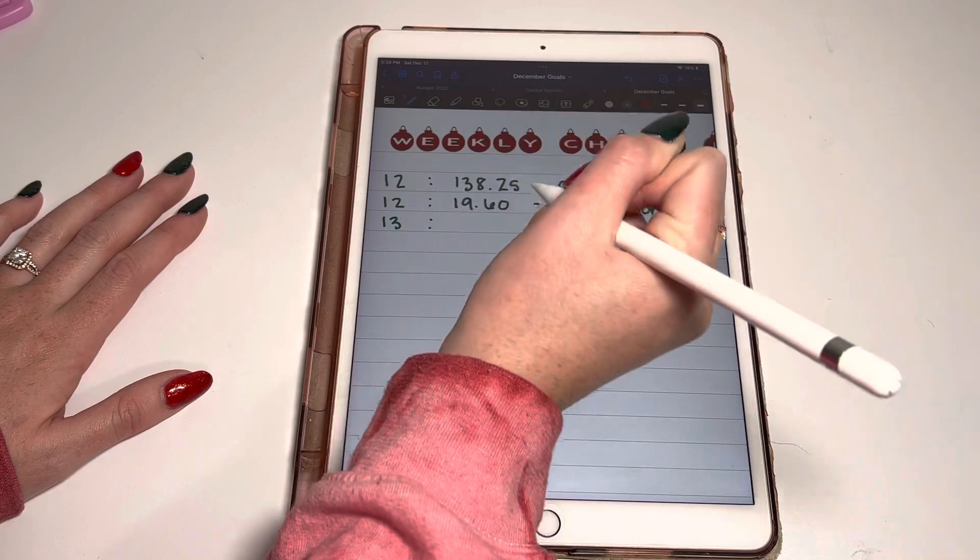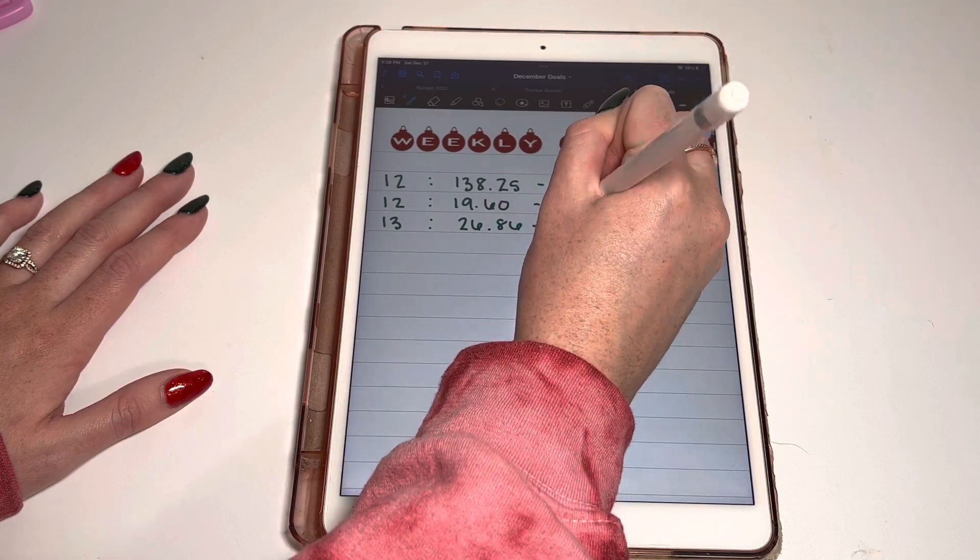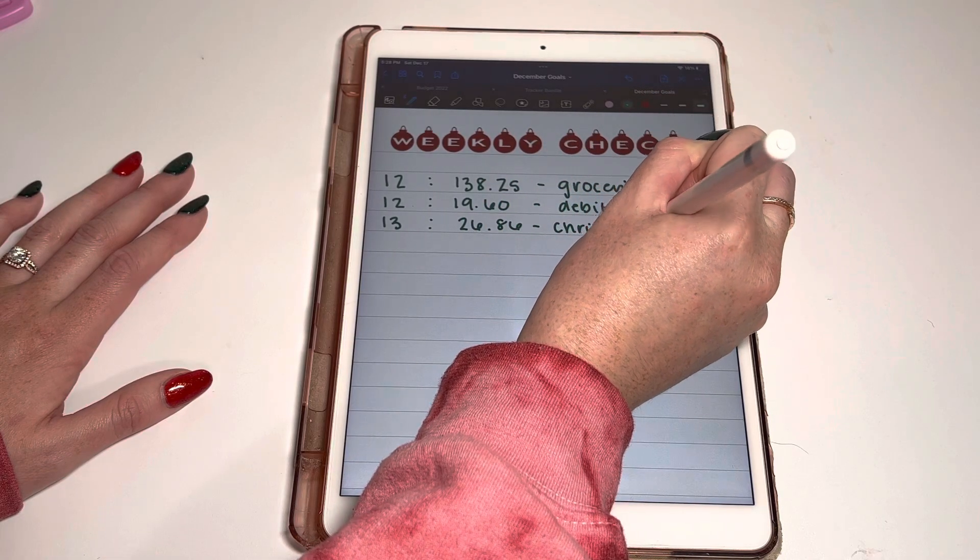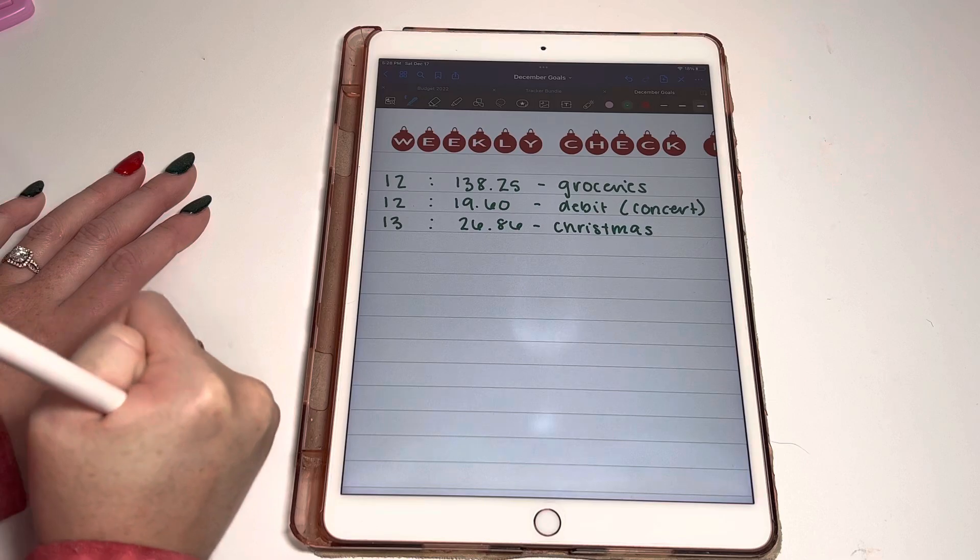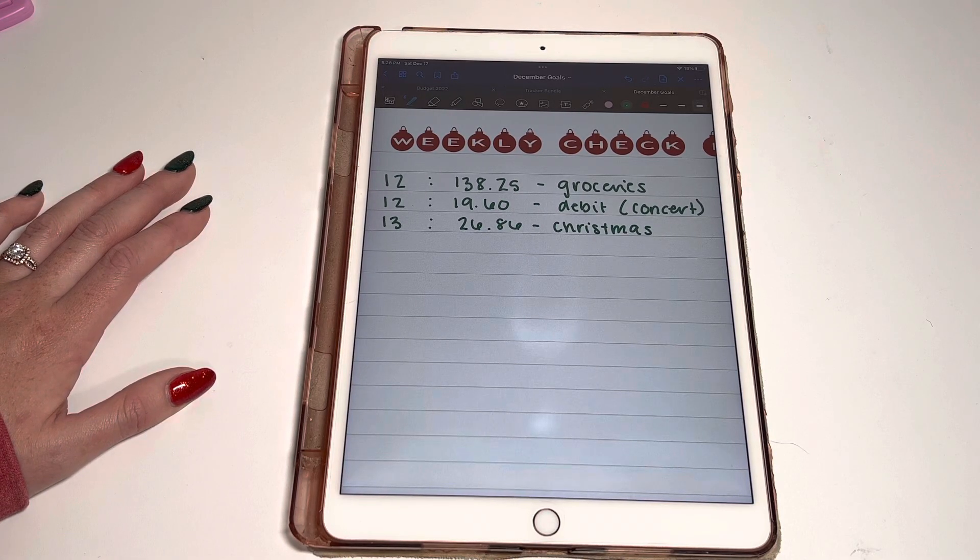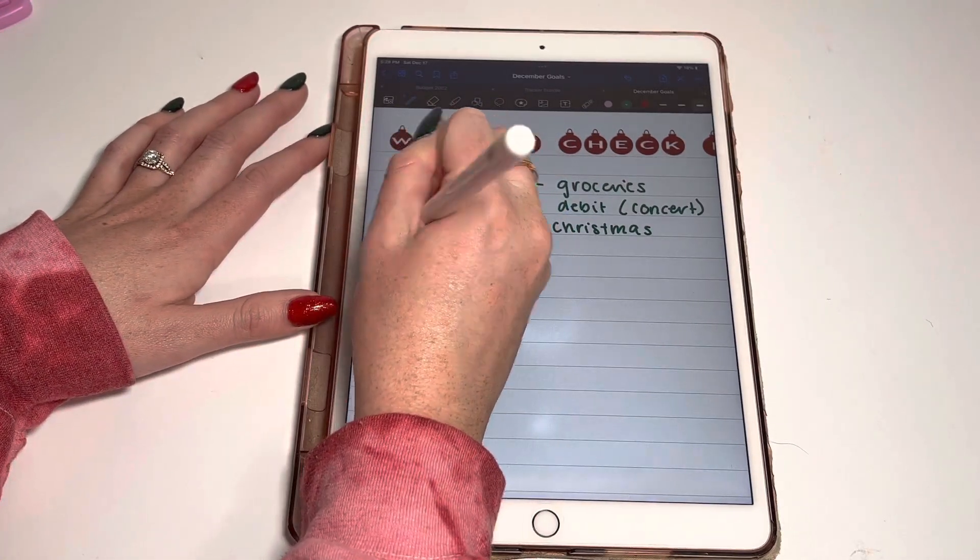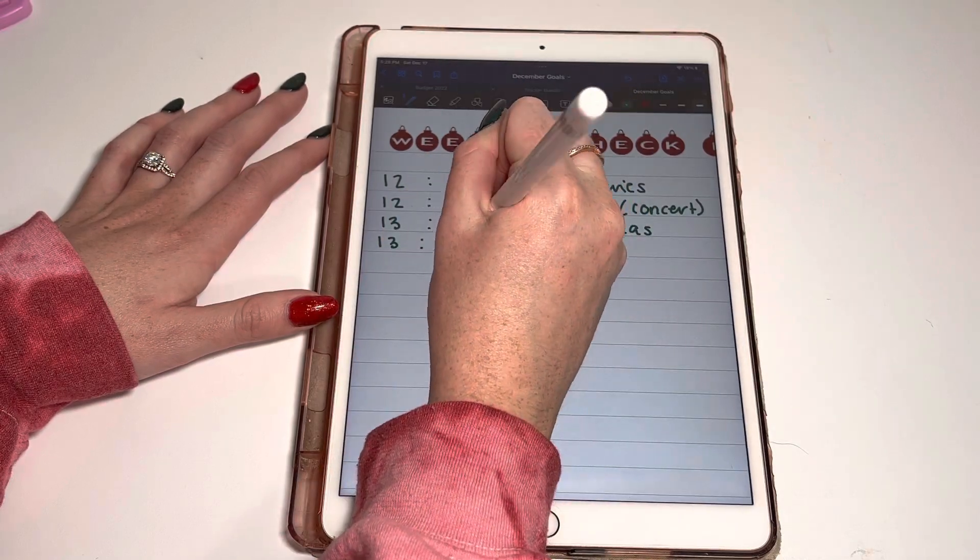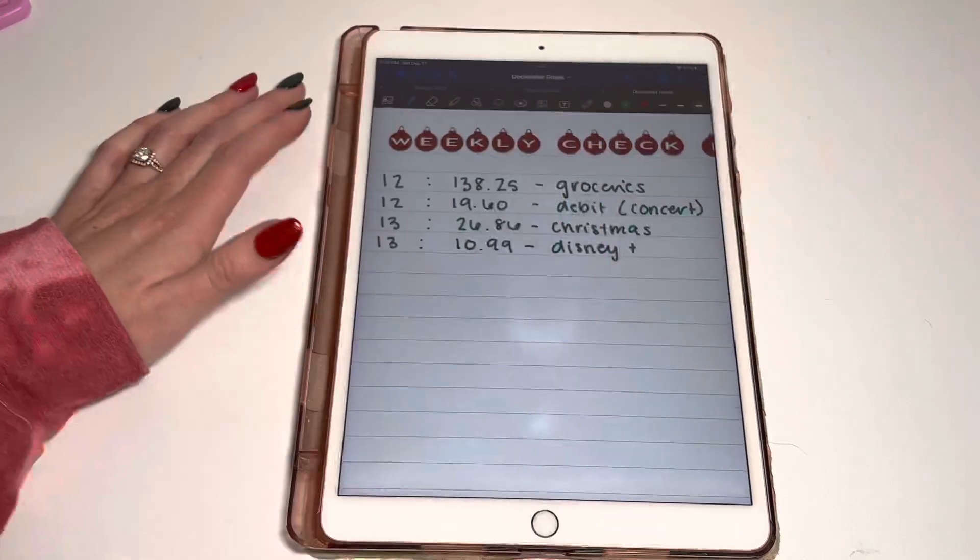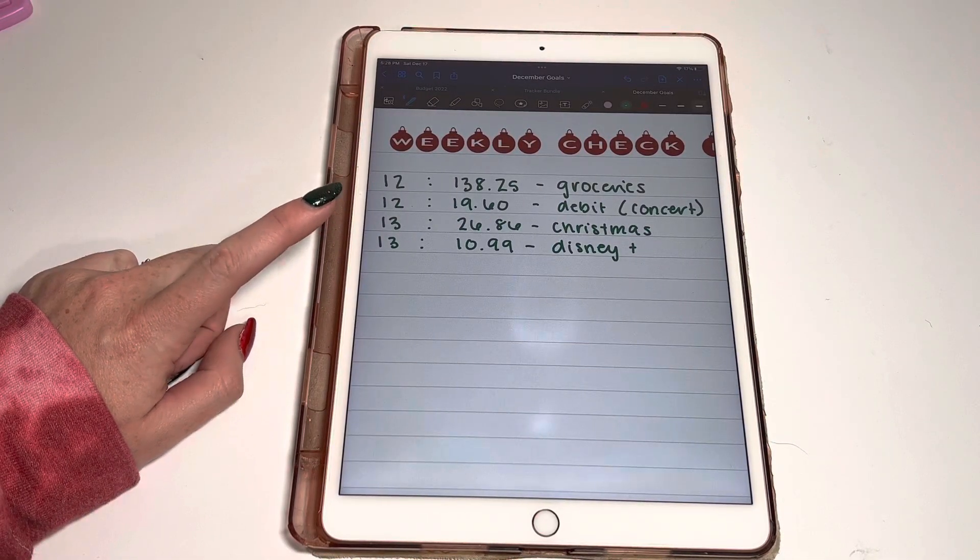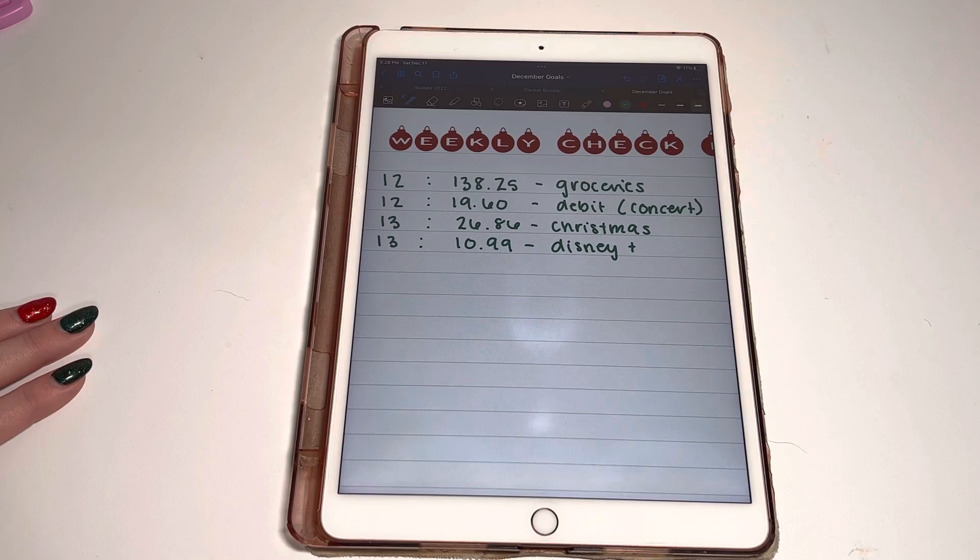On the 13th, I spent $26.86 on Christmas. Love Christmas shopping. I have three people I need to get for and then I'm done and I can't wait to be done. But I don't know what to get these people and normally I have a pretty good idea. Also on the 13th, Disney Plus came out, which I'm pretty sure that went up. Because I thought it was $9.99, but I guess it went up, which sucks. But we don't have cable, so it is what it is.